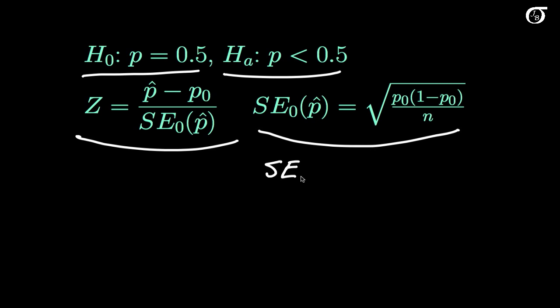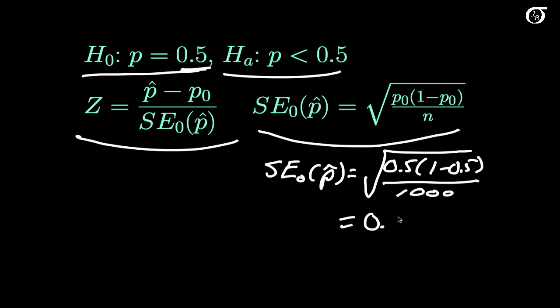The standard error under the null hypothesis of our sample proportion p-hat is going to be the square root of our hypothesized value of p, not the sample proportion, the hypothesized value of p, times 1 minus that over the sample size. And our standard error works out to be 0.0158. Very similar to the one we saw in the confidence interval, but a little bit different in that fourth decimal place.